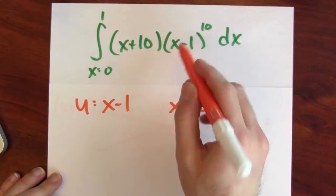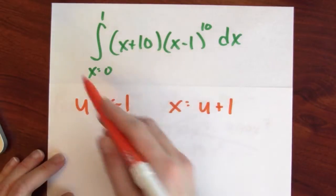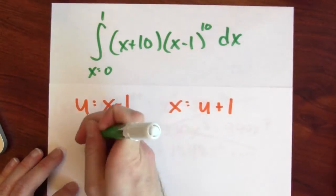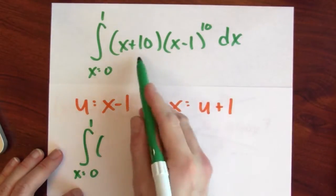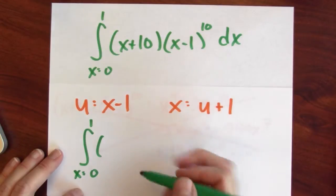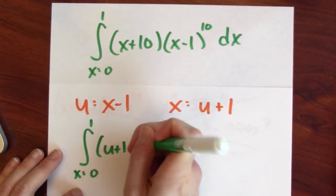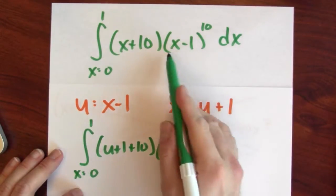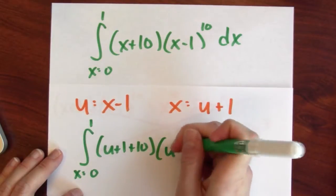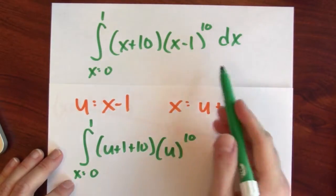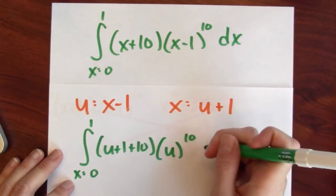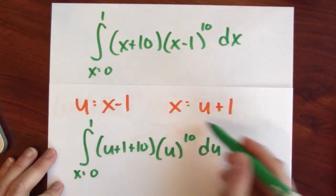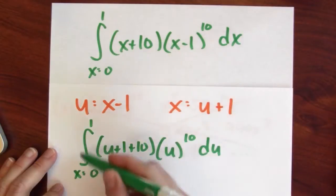And I could make this substitution in this problem. So this integral from x goes from 0 to 1 is, well, what's x plus 10? If x is u plus 1, I could write u plus 1 plus 10. And what's x minus 1? That's just u to the 10th power. And what's dx? Well, if u is x, du is dx. So it's the same as trying to do this integration problem.